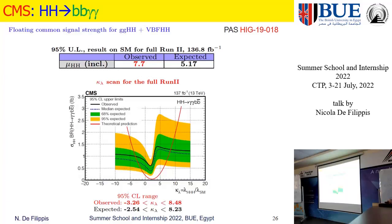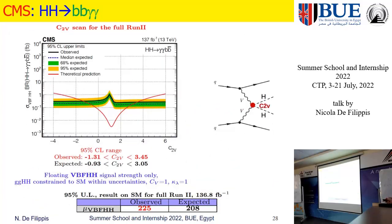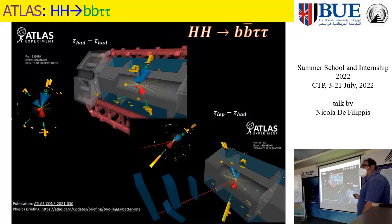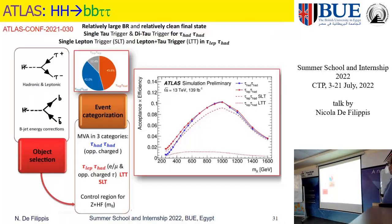Many things are parametrized — for example, the way the cross-section depends on kappa_lambda and also kappa_top is parametrized in terms of a formula which works very well, and the same for the vector boson fusion production. This is the main result for the combination of the CMS double Higgs analysis. In addition to the 4b, bb tau tau and bb gamma gamma, CMS included also other analyses — so-called multileptons — which are bb WW, bb ZZ, and also bbZZ.